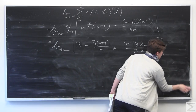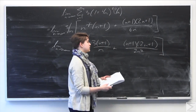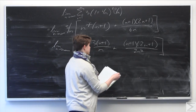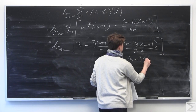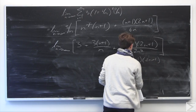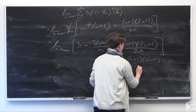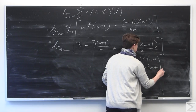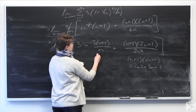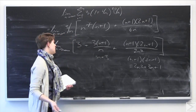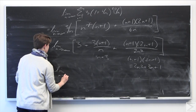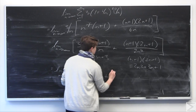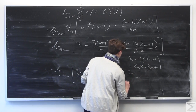Now I'll expand (n plus 1) times (2n plus 1). Distributing: n times 2n is 2n squared, n times 1 is n, 1 times 2n is 2n, so n plus 2n is 3n, and 1 times 1 is 1. So (n plus 1)(2n plus 1) equals 2n squared plus 3n plus 1. And 3 times (n plus 1) is 3n plus 3. So we can rewrite this as the limit as n goes to infinity of 3 plus (3n plus 3) over n plus (2n squared plus 3n plus 1) all over 2n squared.